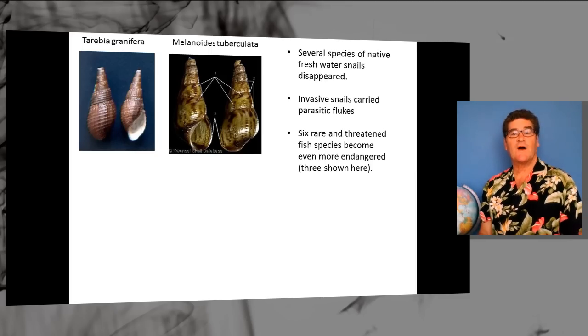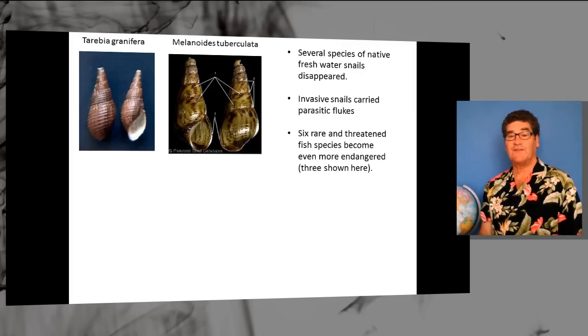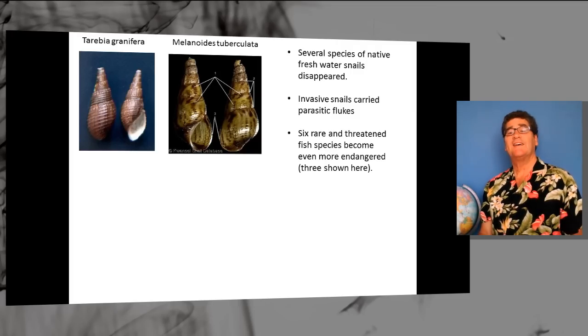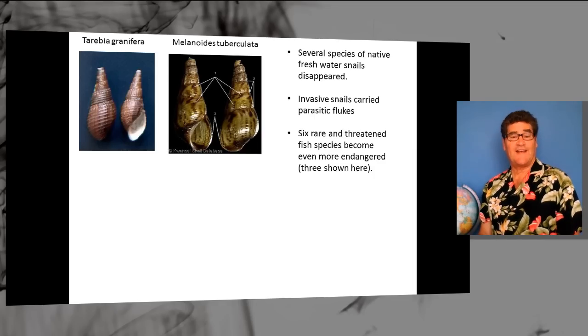Several species of native freshwater snails disappeared. The invasive snails were found to carry parasitic flukes. And six rare and threatened fish species became more endangered in Texas.